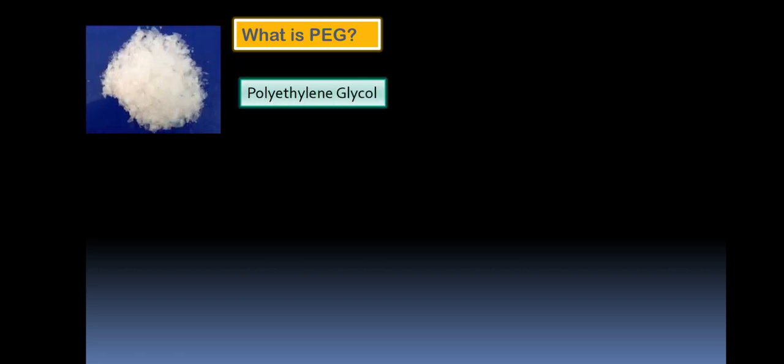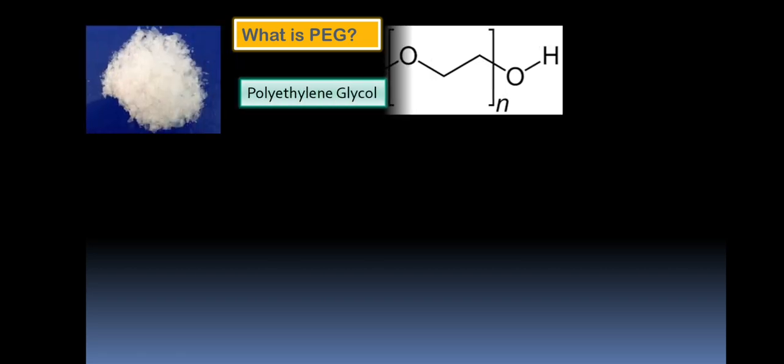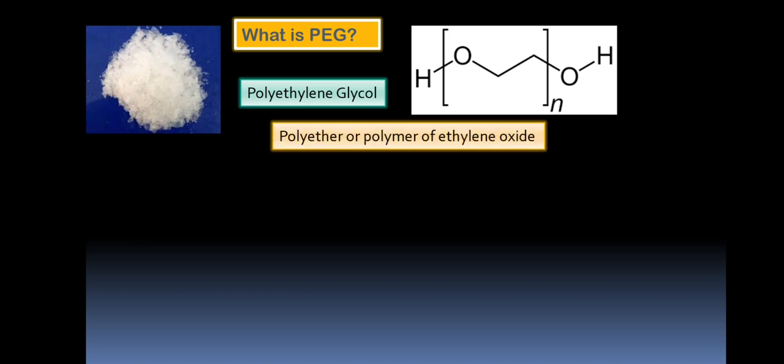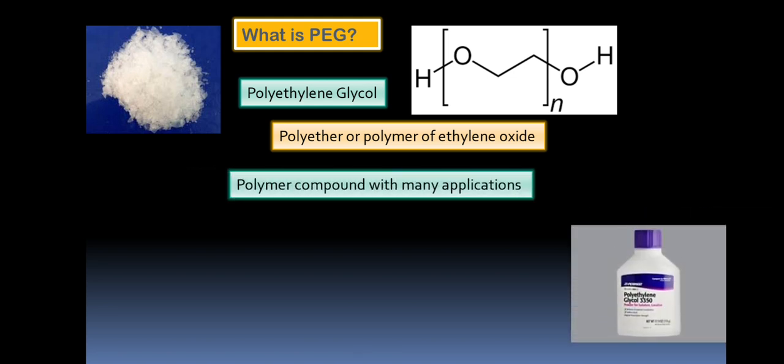So polyethylene glycol, what is PEG? It is an inert chemical compound and you can see this structure. It is a polyether, a polymer of ethylene oxide.